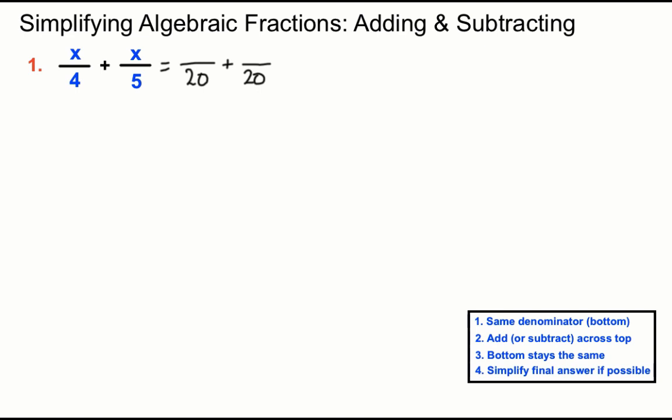So on the bottom of the left hand fraction we have times by 5 to make 4 into 20, so we'd better do the same to the top. We'll be timesing the x by 5 and creating 5x. Whatever we've done to the bottom of the right hand fraction, in this case multiplied by 4, we'll do the same to the top of that fraction and we'll have 4x there. The next bit is to add across the top, so we'll get 5x plus 4x making 9x and we'll keep the bottom the same. So 9x over 20 is our final answer and that won't simplify down at all.